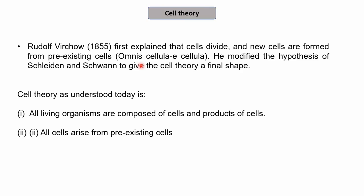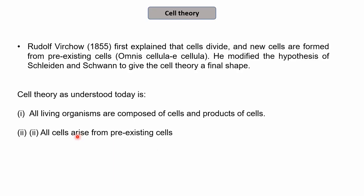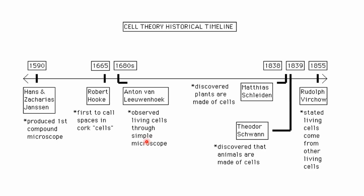A modification was added to the hypothesis. Earlier it just stated that all living organisms are made up of cells, but now a new point was added: all cells arise from pre-existing cells. So today, the cell theory states: first, all living organisms are composed of cells and products of cells; second, all cells arise from pre-existing cells — no cell can independently arise, it must come from a pre-existing cell.